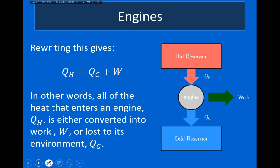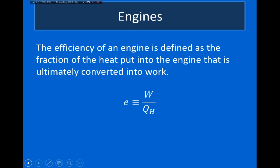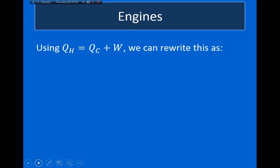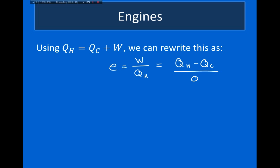When we talk about an engine, we define the efficiency as the fraction of heat put into the engine that is ultimately converted into work — in other words, what we get out divided by what we put in. Using the equation Q H equals Q C plus W, the efficiency equals the work output divided by the heat input, which we can rewrite as one minus Q sub C divided by Q sub H.